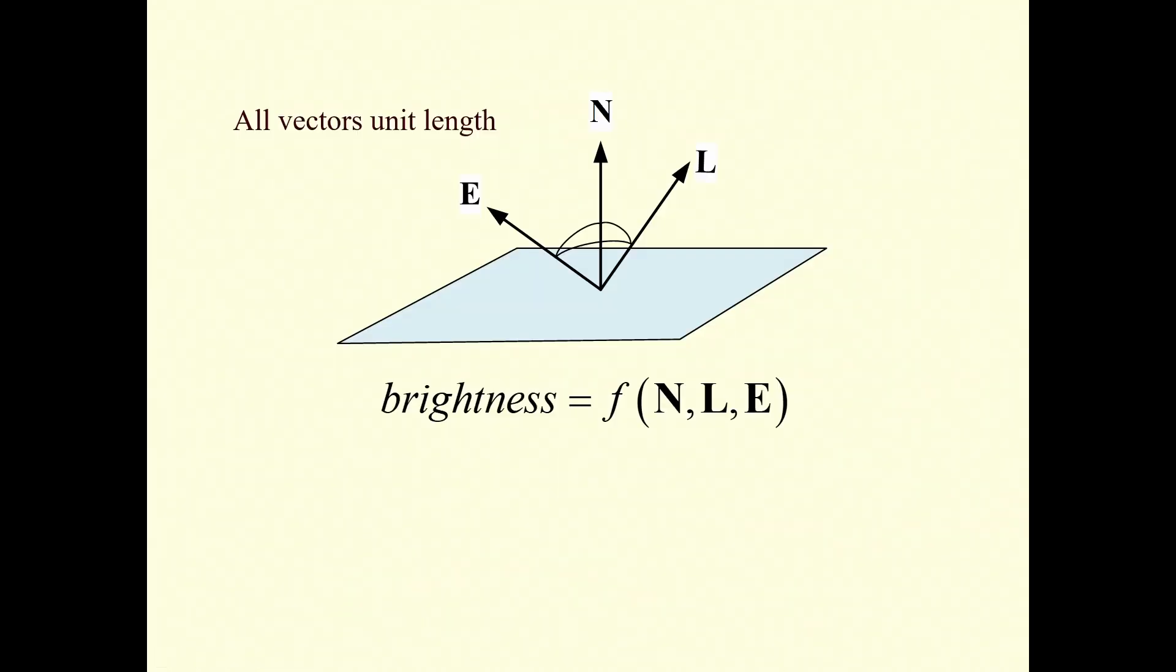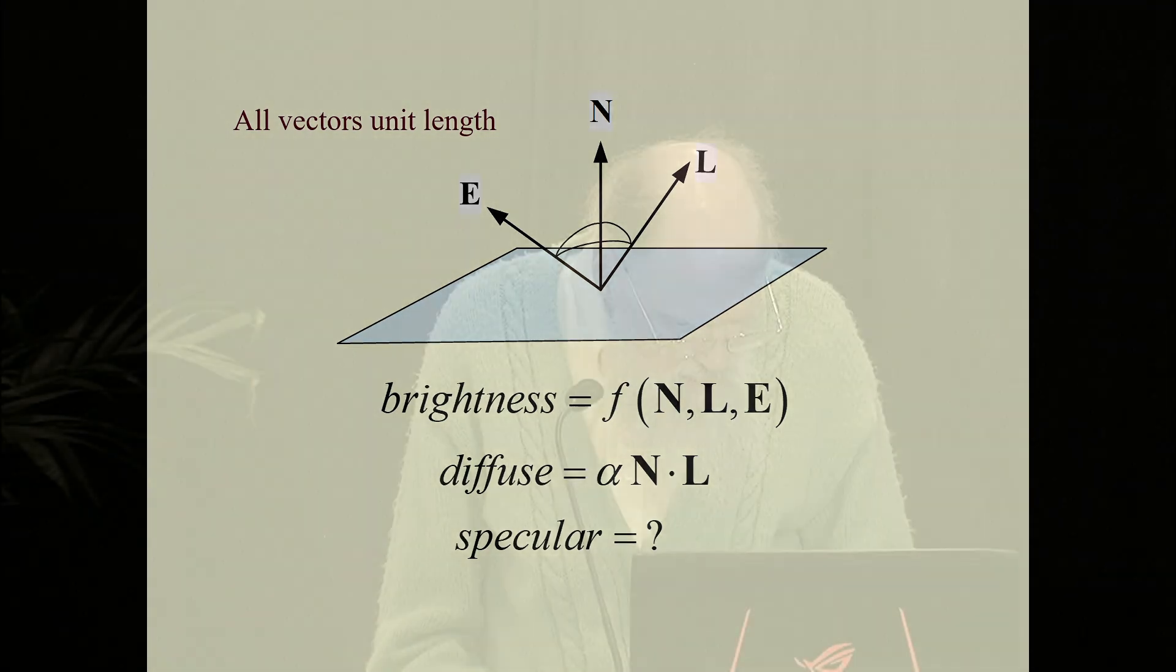So the whole thing has to do with calculating the brightness of something with a light coming one direction, bouncing off a surface normal, and hitting the eye, and how much light you get is some function of the vectors N, L, and E. The diffuse component is typically N dot L. That's fairly simple, but the trick is how do we calculate the specular component.